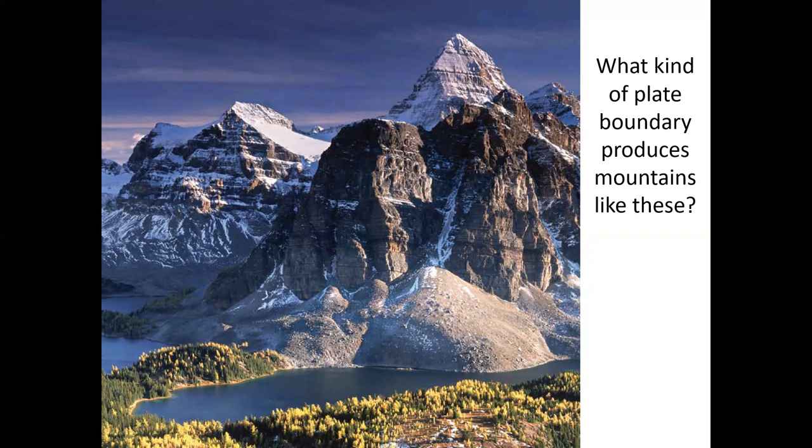The other two types of convergent boundaries — ocean-ocean and ocean-continent — produce volcanoes, which aren't held together very well; they're rotten and easy to erode by mass wasting, weathering, and erosion. Mountains formed from the crumpling of continental plates against each other are made of normally stronger rocks.